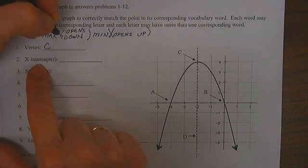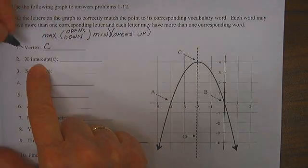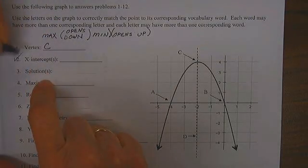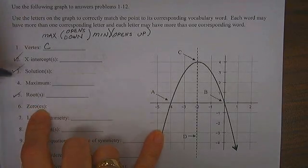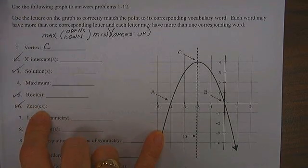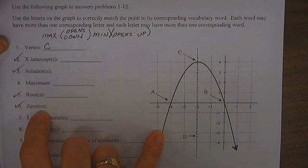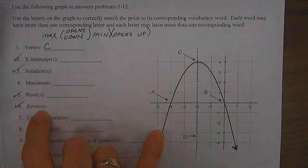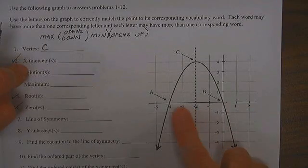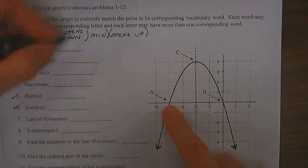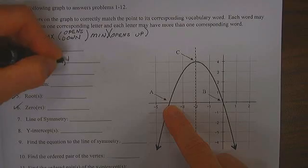The x-intercept, the solution, the root, and the zeros are all the same point. Where does the curve cross the x-axis? At A and B.